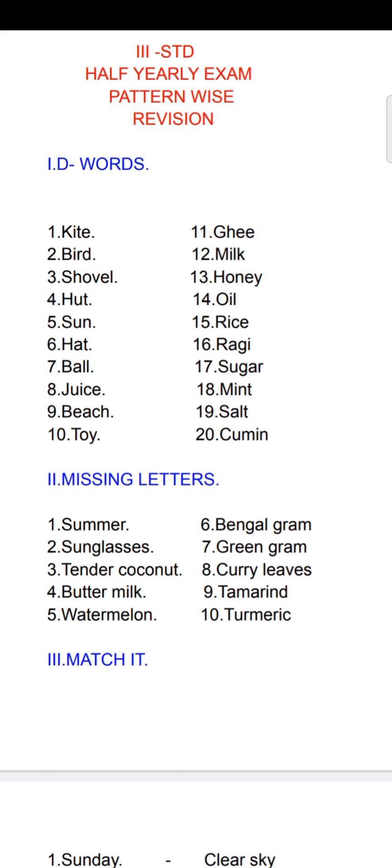Fourth one: butter milk, B-U-T-T-E-R, M-I-L-K. Fifth one: water melon, W-A-T-E-R, M-I-L-K. Sixth one: bengal gram, B-E-N-G-A-L, G-R-A-M. Seventh one: green gram, G-R-E-E-N, G-R-A-M.